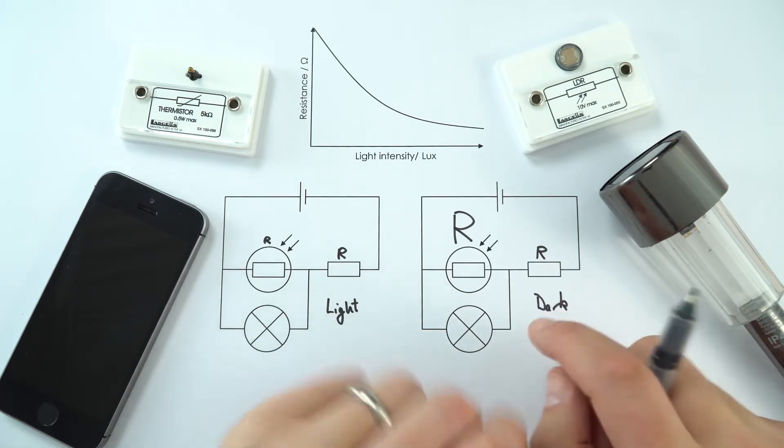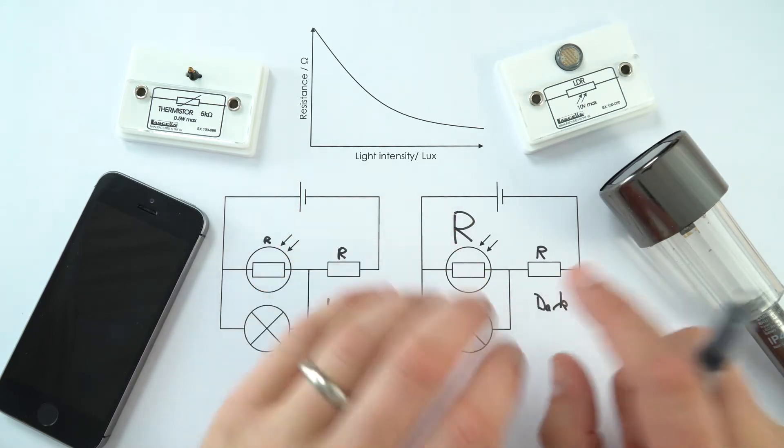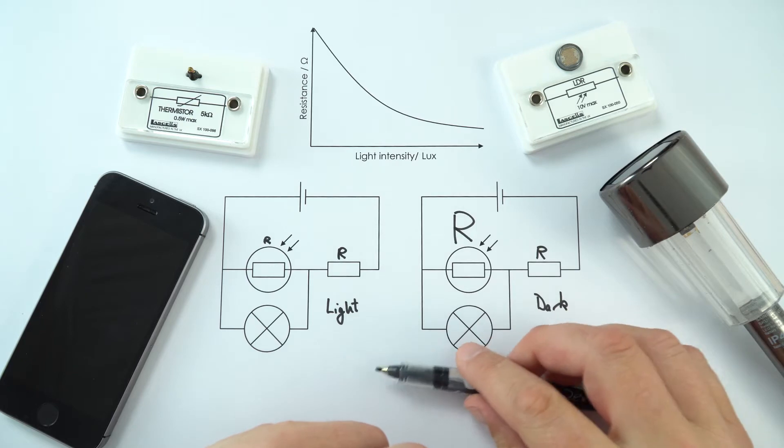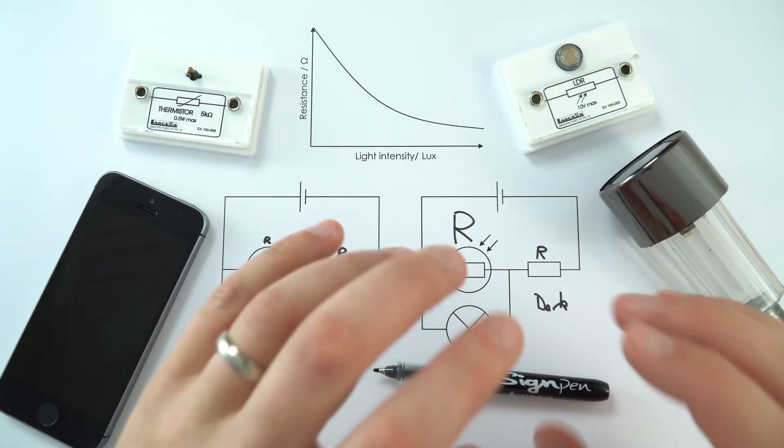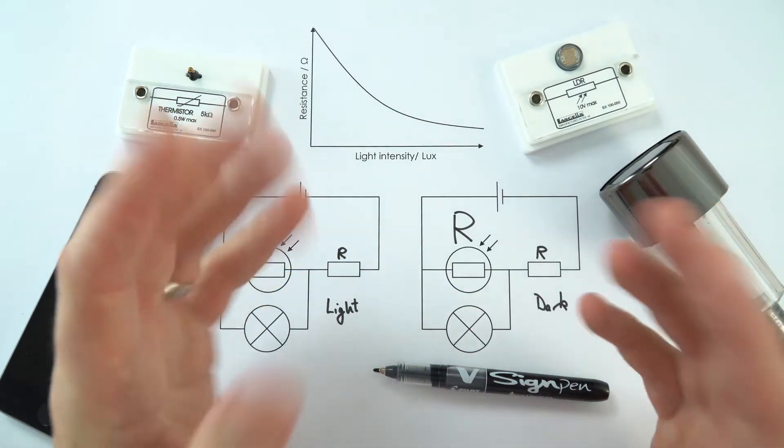So that's the way that this can... this is one example. There's other different circuits that maybe use these components in slightly different ways, but that's one of the ways in which we can use an LDR in a real life circuit to actually change what happens in the circuit for the outside conditions. And that's incredibly useful.